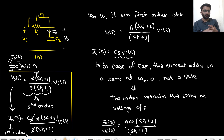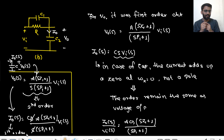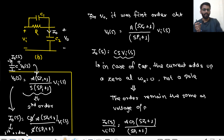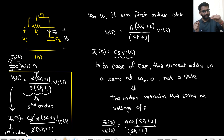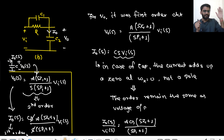So whenever you say the circuit is second order for voltage, you can't automatically say it's second order for current as well. You need to check: if there is a pole at ω = 0 in the voltage transfer function, then going to current will cancel that pole with the zero added by the capacitor current, effectively reducing the order.